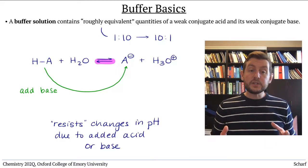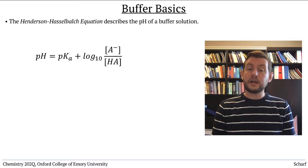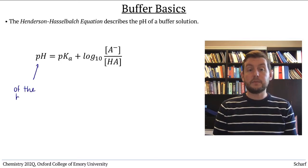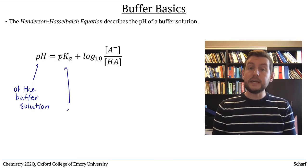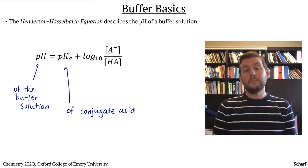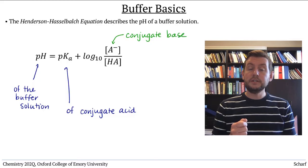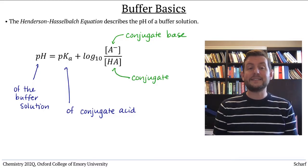The pH of a buffer system is given by an equation called the Henderson-Hasselbalch equation, where the pH of a buffer solution is equal to the pKa of the weak acid, that is the conjugate acid, plus the log base 10 of the conjugate base concentration over the conjugate acid concentration.